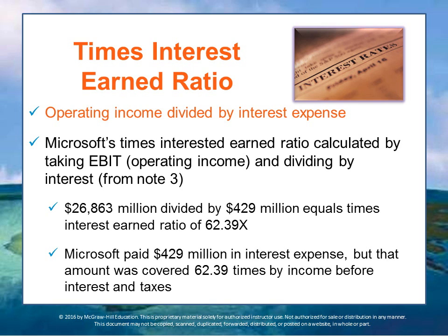For this ratio, Microsoft's EBIT — operating profit, earnings before interest and taxes — of $26.86 billion is divided by their interest expense. Microsoft had so little interest expense that it did not list it as a separate item on its income statement. The analyst has to go searching through the footnotes of the financial statements. In note 3, we find that interest expense was $429 million.